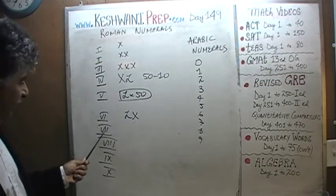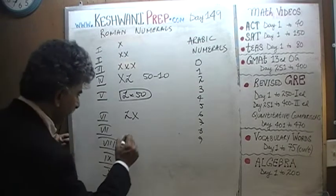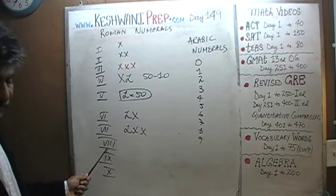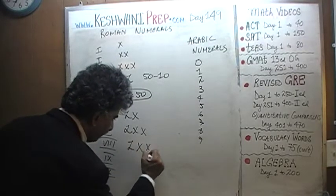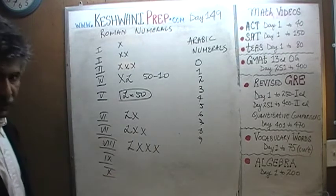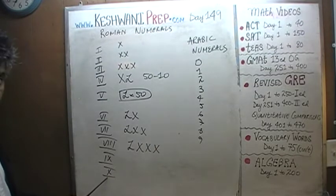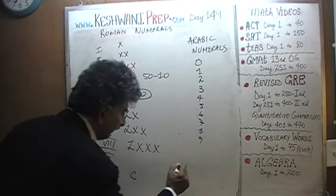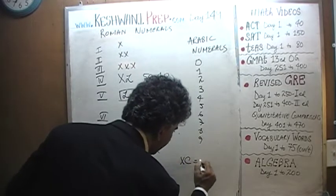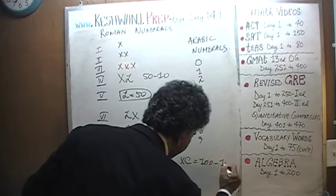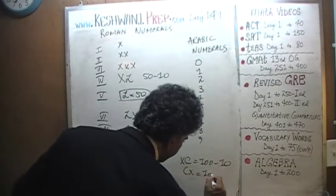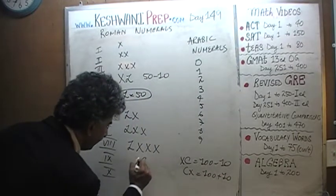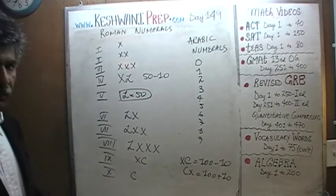For 90: the same concept applies. You write your 100, which is C. If you write X to the left of C, it is 100 minus 10, which is 90. If you write X to the right of C, it is 100 plus 10, which is 110. So 90 is simply XC — you write your 100 and put X on the left. So far so good, this is also very straightforward.